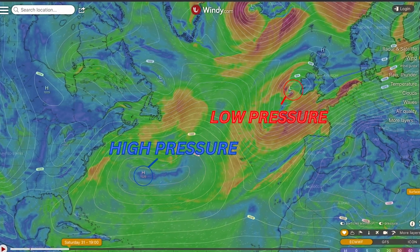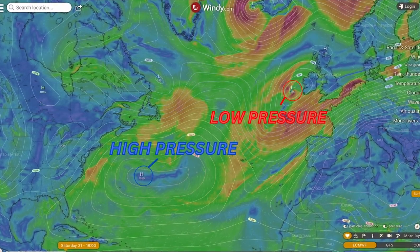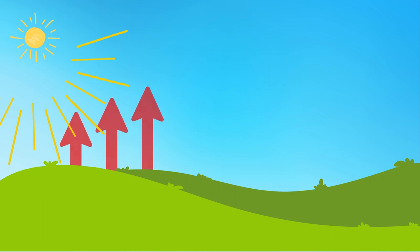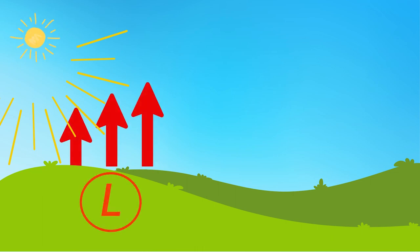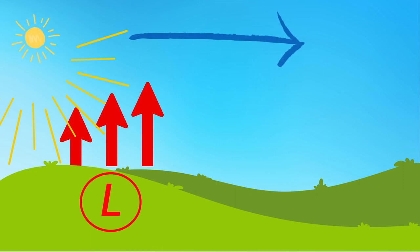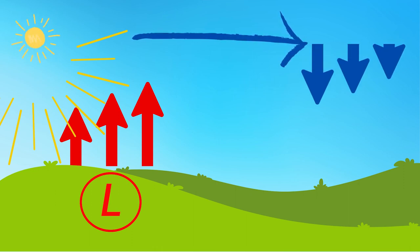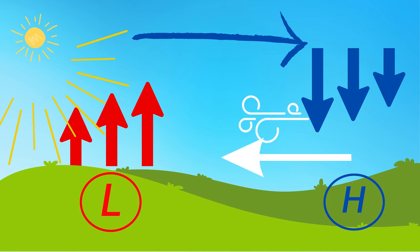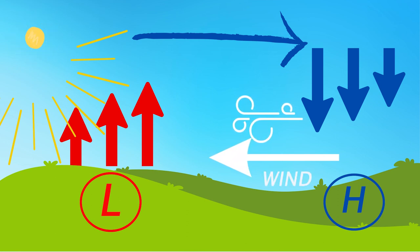We have high and low pressure systems. A low pressure system appears when the sun heats up the land. The land becomes hot. As hot air is light, it starts rising. Once the air reaches the atmosphere, the air cools down. Cold air is heavier, so it starts sinking towards the earth, and this creates a high pressure area. As there is air missing in the low pressure area, the air from high pressure replaces it.